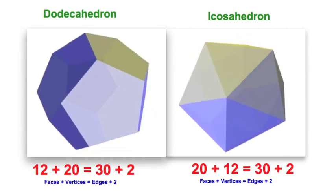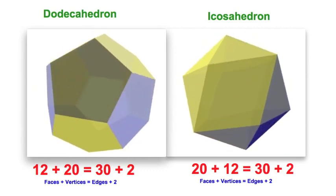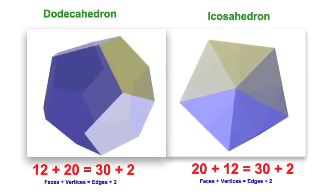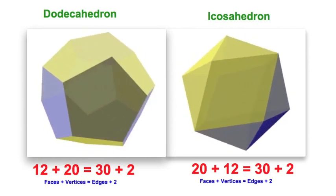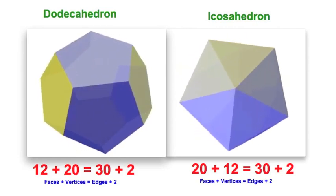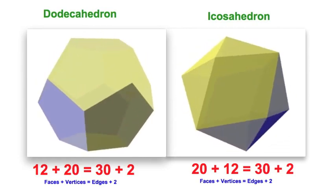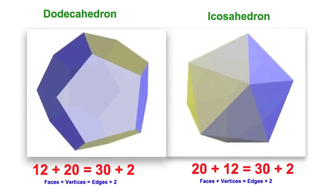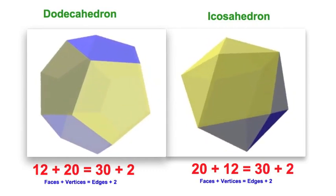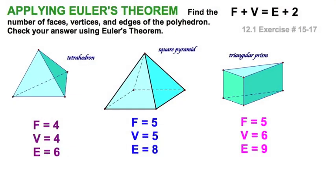Let's just mention the dodecahedron and the icosahedron. On the left you can see 12 faces, each of them a pentagon, and on the right, 20 faces. We won't be doing a lot with these figures, but that rounds out our platonic solids.